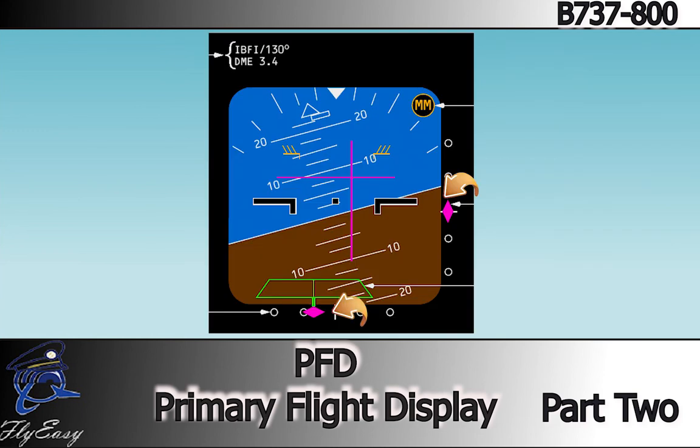ILS Glide Slope and Localizer Deviation, Frequency Identification, DME, Course, and Marker Beacon Indications are provided. The Approach Reference Area displays the selected ILS identifier or frequency, Approach Front Course, and ILS DME Distance.